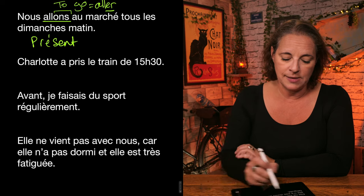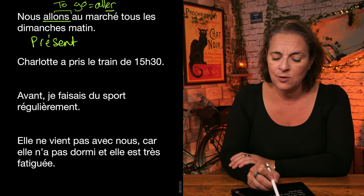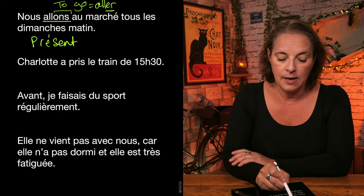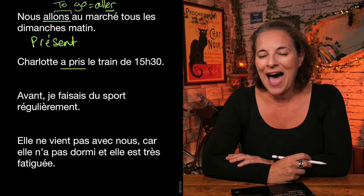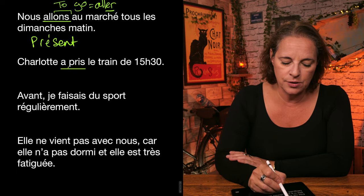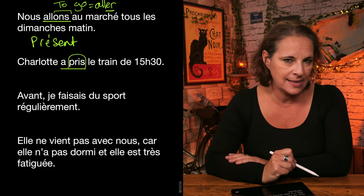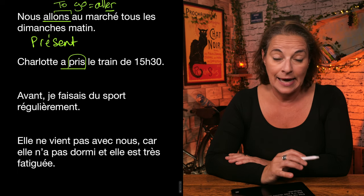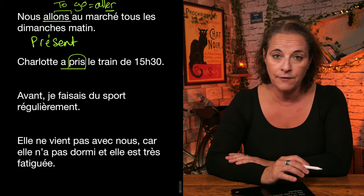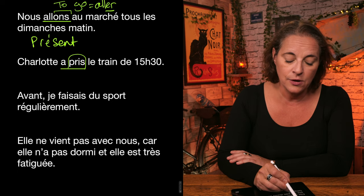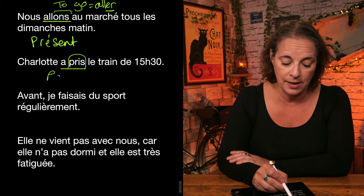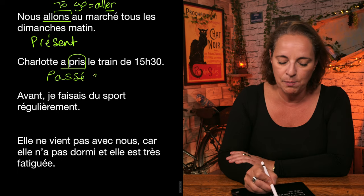Now remember, identify what tense we see. Charlotte a pris le train de 15h30. Identify where the verb is. I can see it here. It's not le train. That's a noun. It's not 15h30. That's a time. It's here. A pris. It's not just here. Because it doesn't go on its own pris. It has to come with an auxiliary, avoir here in that case.